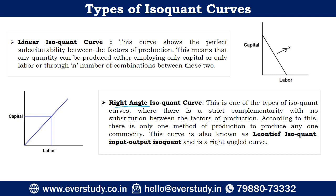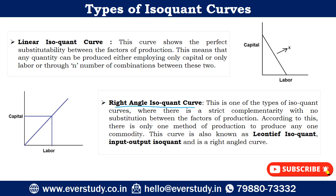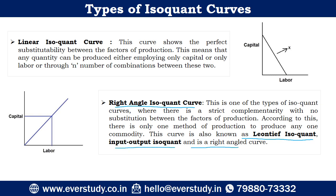The next type is the right angle isoquant curve. This curve is also known as the Leontiff isoquant and input-output isoquant. It is a right-angled curve.